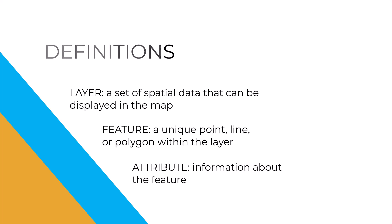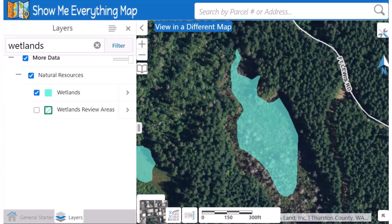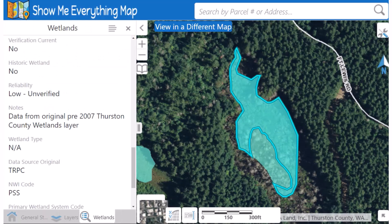Each feature has unique attributes, which contain information about the feature. For example, wetlands is a layer containing polygon features with many attributes, including wetland ratings and verified dates.